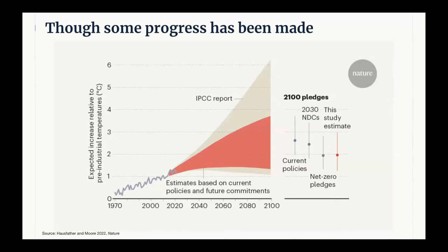Some progress has been made — a decade ago it seemed like we were on track for a particularly dark climate future. Global coal use had doubled over the 2000s and global emissions increased by 33 percent in just one decade. Fast forward a decade later: global coal use peaked in 2013 and the IEA argues coal will be in structural decline for much of the century, partly because it's more expensive than cleaner alternatives like renewables and natural gas. We've also seen dramatic cost declines in clean energy and increased climate ambition by countries.